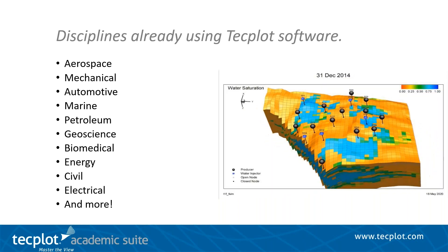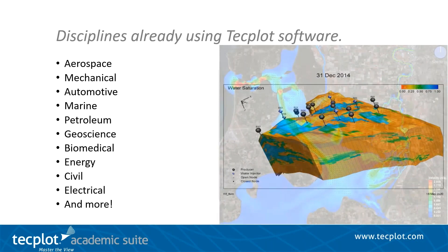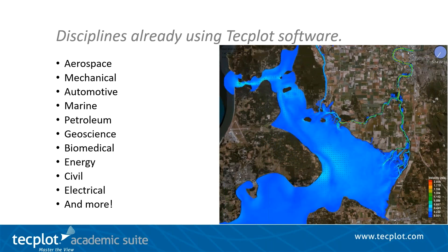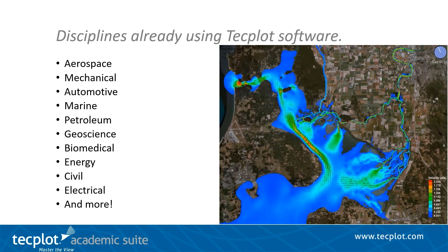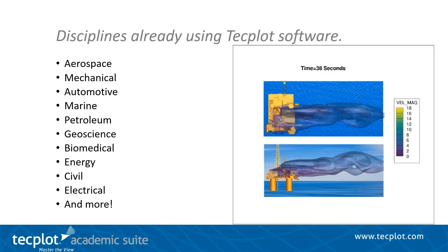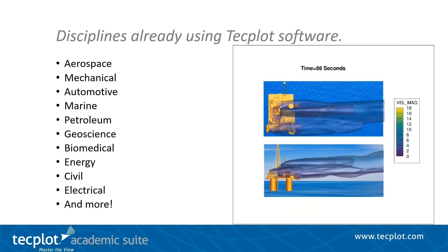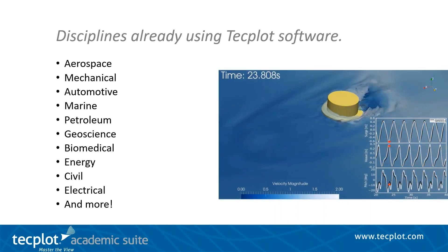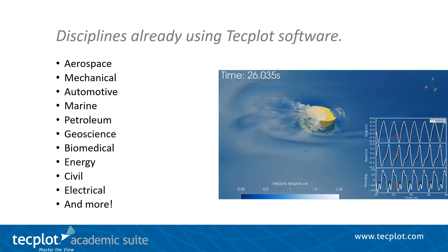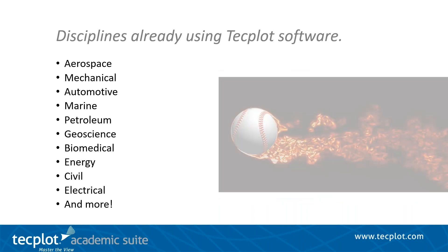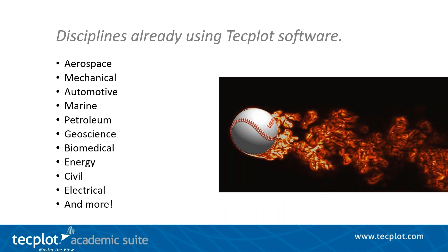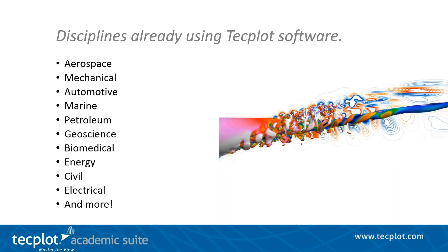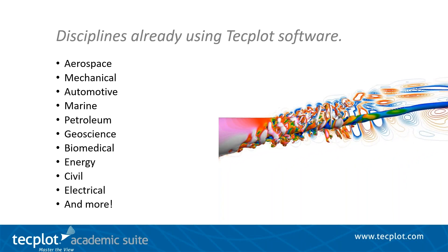We also have users in geoscience involving oceanography, groundwater modeling, river morphology, and water quality modeling. Users in biomedical use our tools to assist in pharmacology, physiology, virology, and the designing of safer prosthetic heart valves. Engineers in energy industries use our software for oil and gas, geothermal, wind, wave, hydroelectric, or nuclear reactor simulation. Civil engineers use it for structural analysis and environmental impact. Electrical engineering for simulating semiconductor fabrication and many other applications. So in multiple disciplines, TechPlot software has been and is still being used by students, faculty, and researchers to better understand the results of simulation and experimental data.